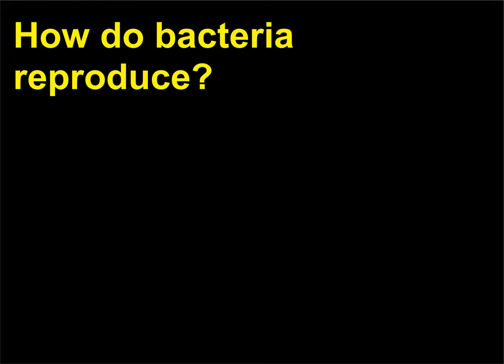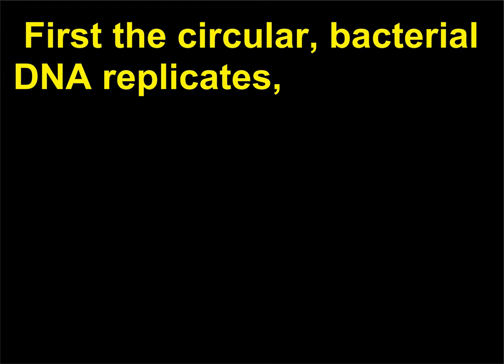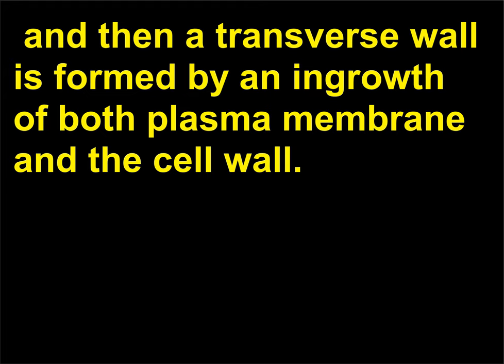How do bacteria reproduce? Bacteria reproduce asexually by binary fission, a process in which one cell divides into two similar cells. First, the circular bacterial DNA replicates, and then a transverse wall is formed by an ingrowth of both the plasma membrane and the cell wall.